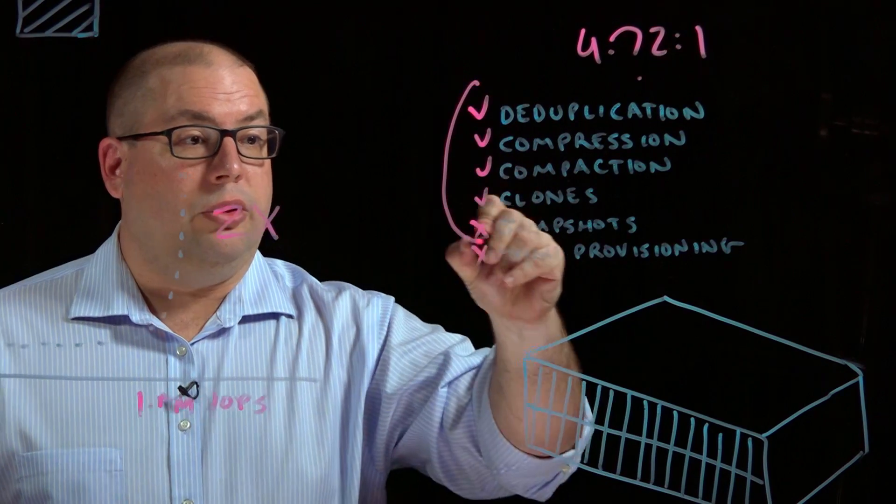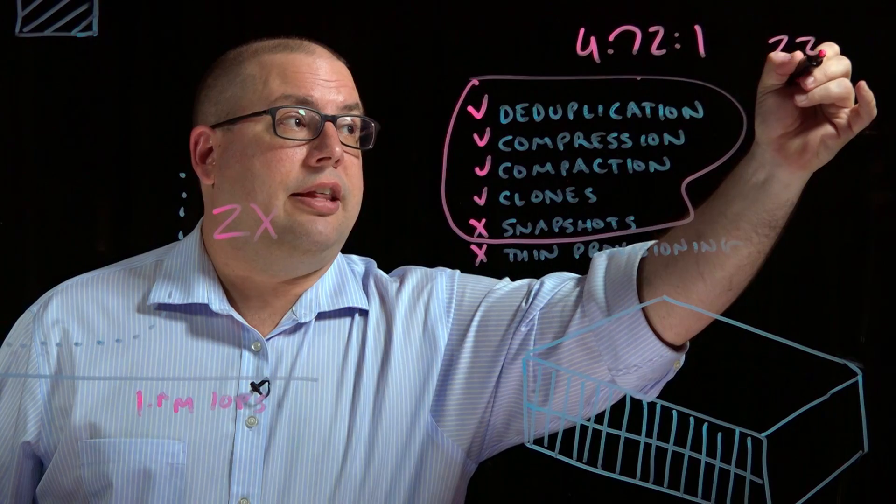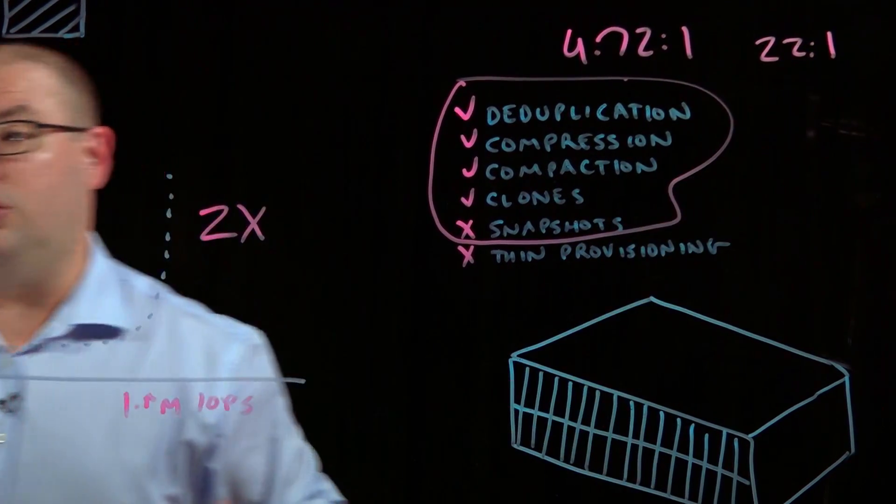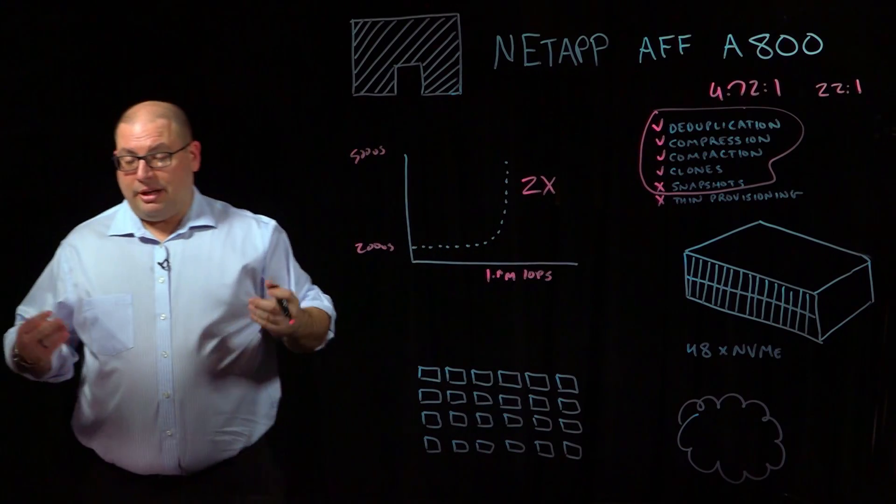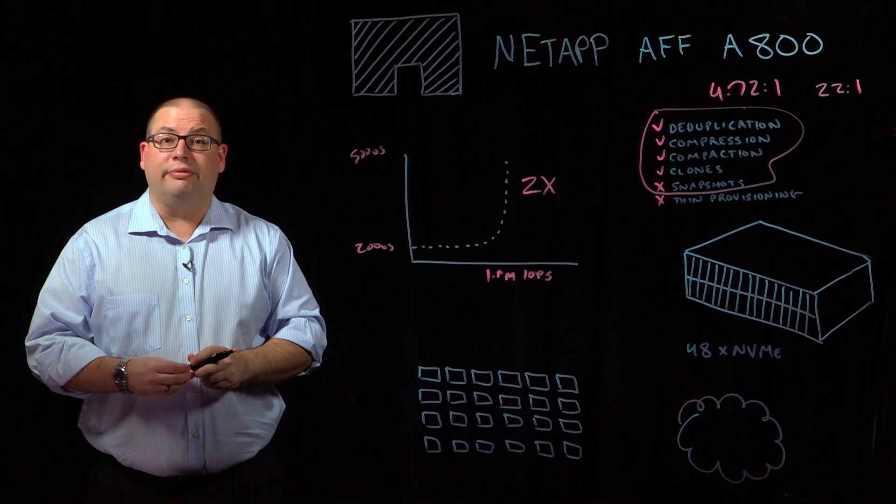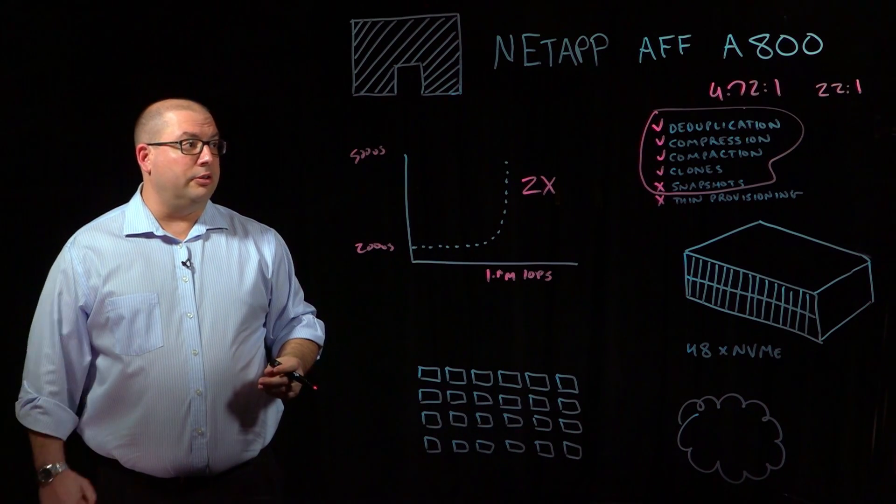When we do include these technologies that include snapshots, you can see that our ratio goes to 22 to 1. And that may come as no surprise since NetApp invented snapshots over 25 years ago and they're widely used within our install base.